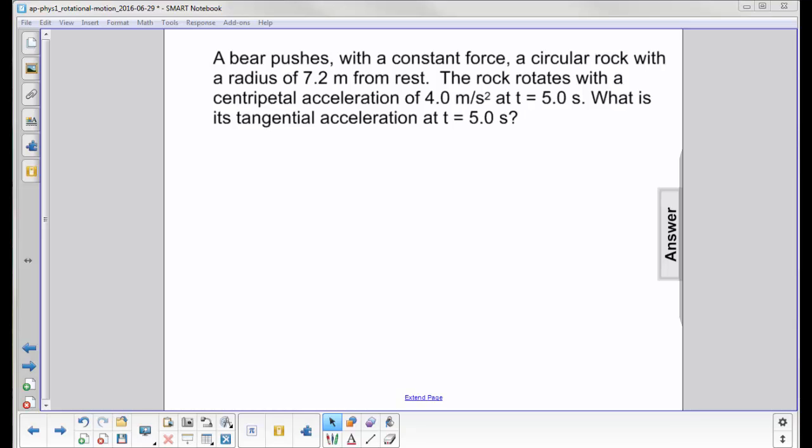A bear pushes with a constant force a circular rock with a radius of 7.2 meters from rest. The rock rotates with a centripetal acceleration of 4.0 meters per second squared at t equals 5 seconds. What is its tangential acceleration at that point?